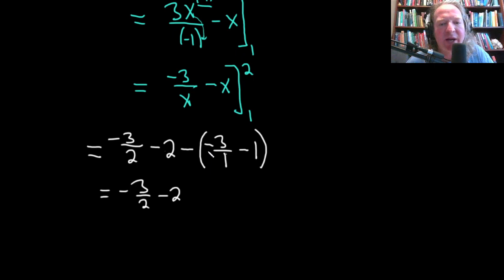And here we have this minus here. I'm just going to leave it out here for a second. Minus 3 minus 1 is minus 4. Okay, so this is going to be negative 3 halves minus 2 and then plus 4.